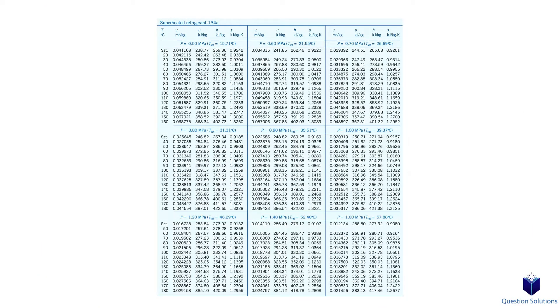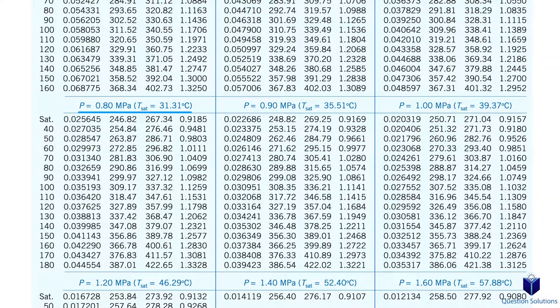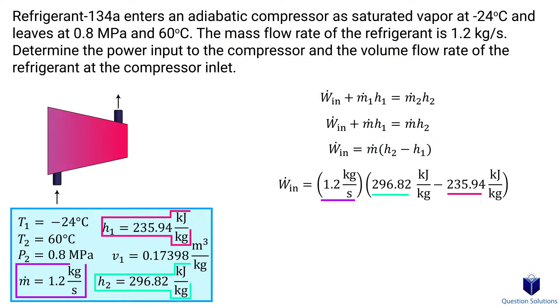Next, we need the final enthalpy value. Now it's a superheated vapor and our pressure is 0.8 mega pascals and the temperature is 60 degrees celsius. So our enthalpy value is right here. We can now plug our values in. Solving gives us the power input for this compressor.